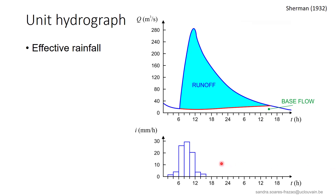Let us consider a measured rainfall event as illustrated here and the corresponding hydrograph. Using one of the methods described in a previous lesson, we can separate the base flow and the runoff hydrograph. We can calculate the volume of water in the runoff hydrograph, that is the volume here in blue. Transferring this volume on the hyetograph allows to separate the net rain from the part that is lost for direct runoff, either by infiltration or evapotranspiration. From this, we can determine the index phi.